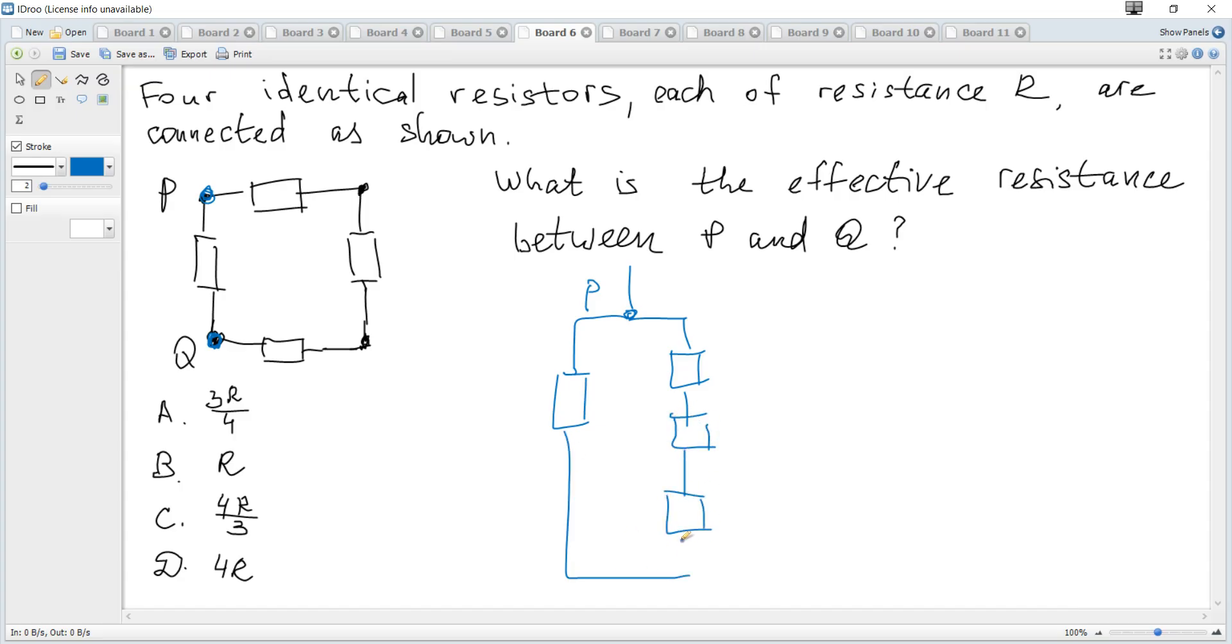And how to find the effective resistance? It's quite easy. We can consider these three. They are in series and to find the resultant resistance for three resistors in series, it's just the sum.